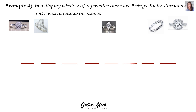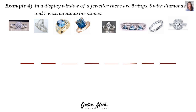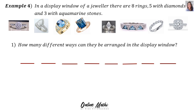Example 4: in a display window, in the first space there are 8 possibilities, then 7, 6, 5, 4, 3, 2, 1. The answer is in fact 8 factorial, and when we work that out it is 40,320 different ways.